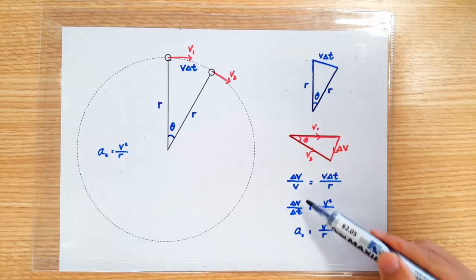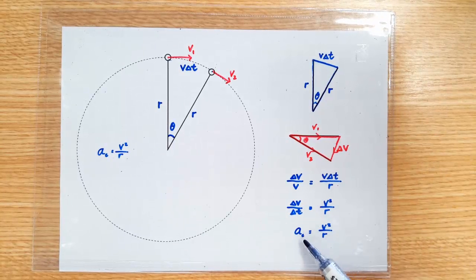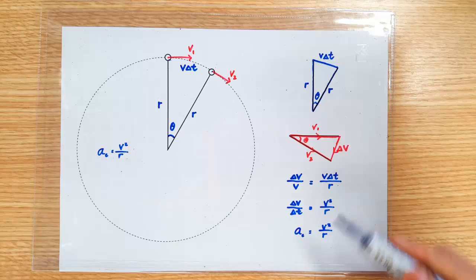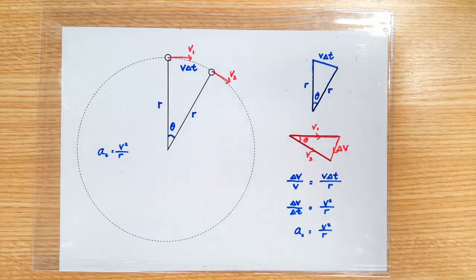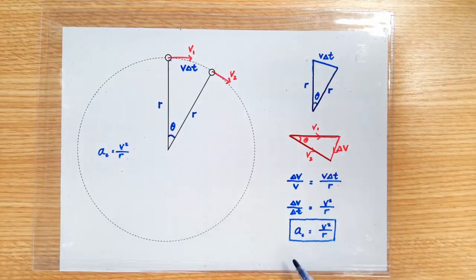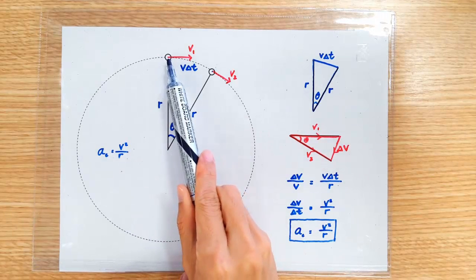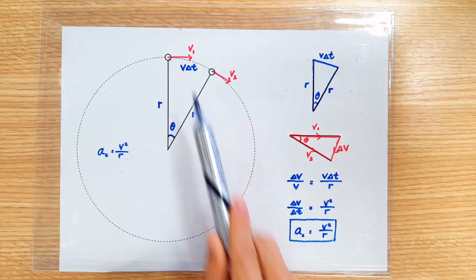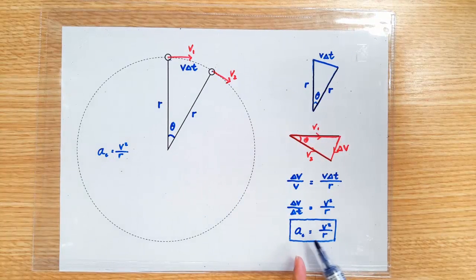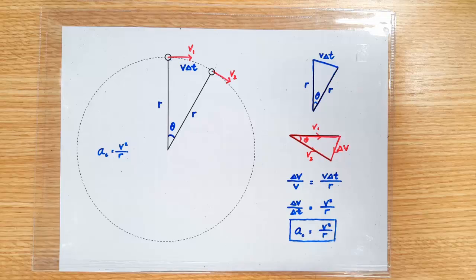When delta T is small enough, delta V over delta T is actually the instantaneous acceleration, which is V squared over R. So, with some simple geometry, we have shown that when an object is doing circular motion at a constant speed V radius R, then its velocity is changing at the rate of V squared over R.